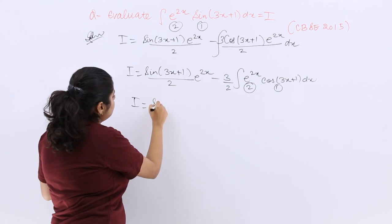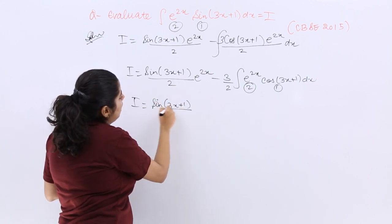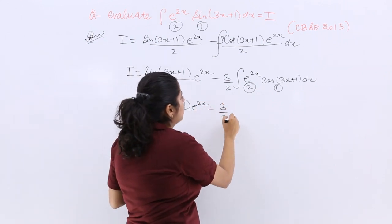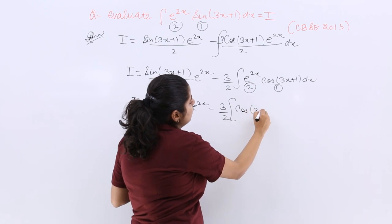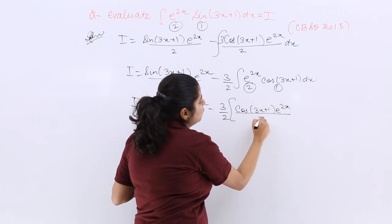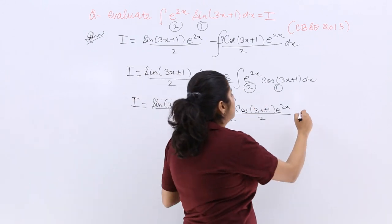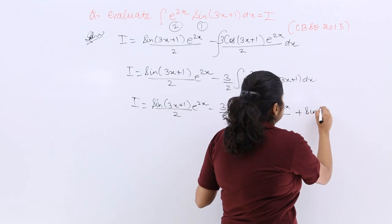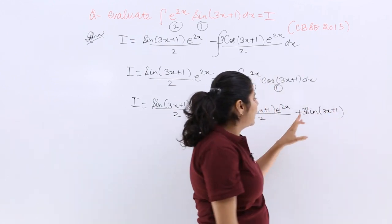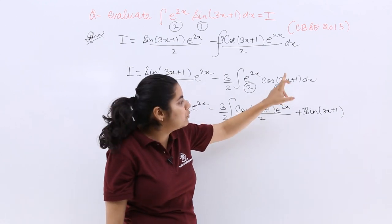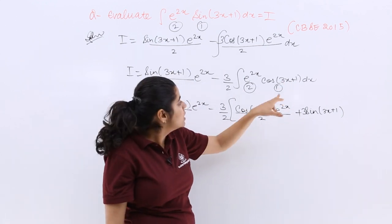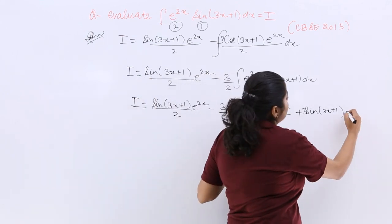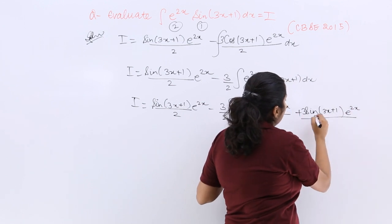This is sin(3x+1) upon 2 e raised to the power 2x minus 3 upon 2, first function into integration of second function with integration denominator 2, minus differentiation of first. Cos differentiation is minus sign, so minus was there, one for integration formula and one for cos differentiation, so minus minus is plus.